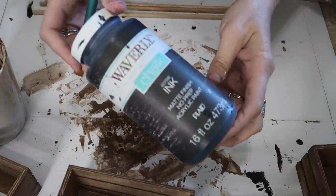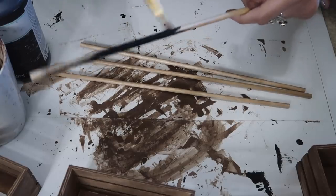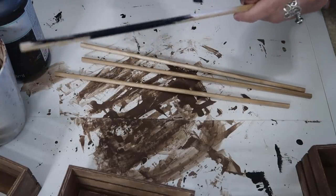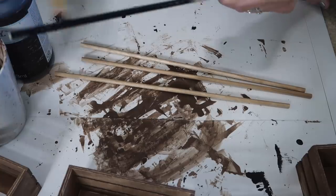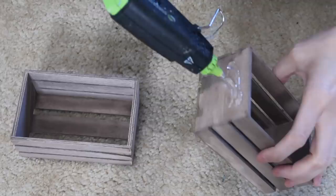The next thing I'm going to do is take the Waverly chalk paint in ink and be painting four of these wooden dowels from Dollar Tree. I just had these leftover from different DIYs.